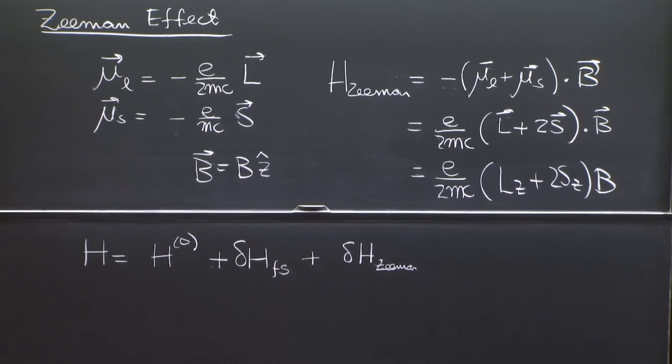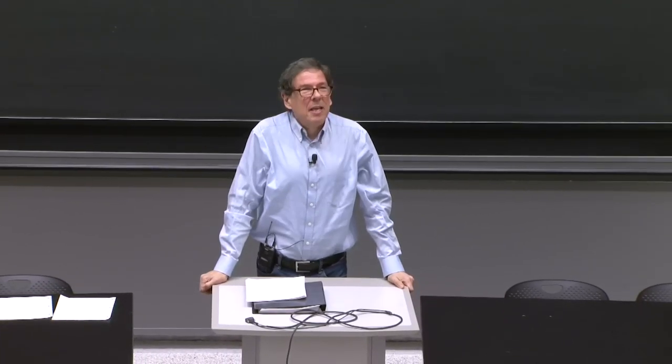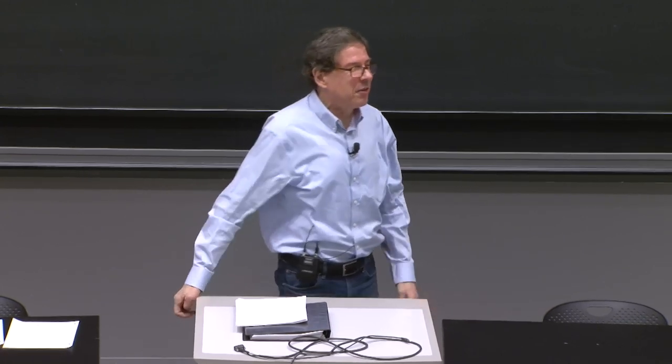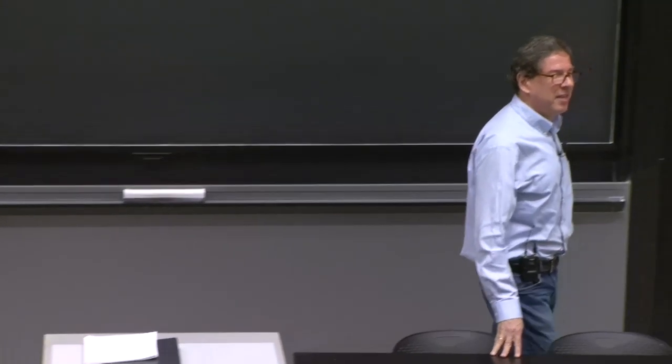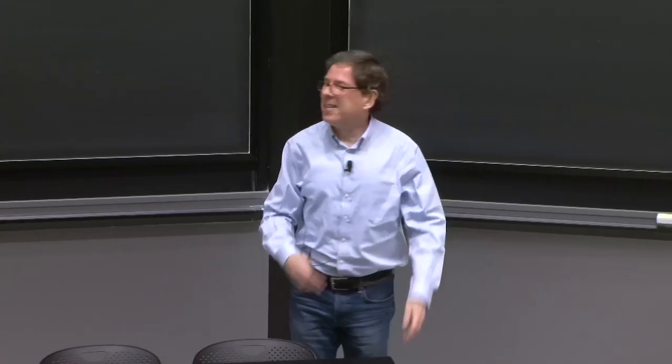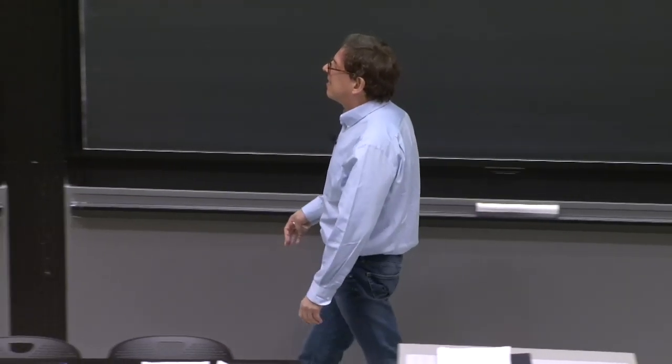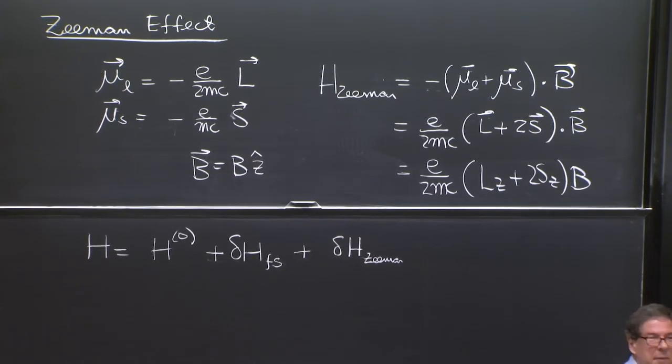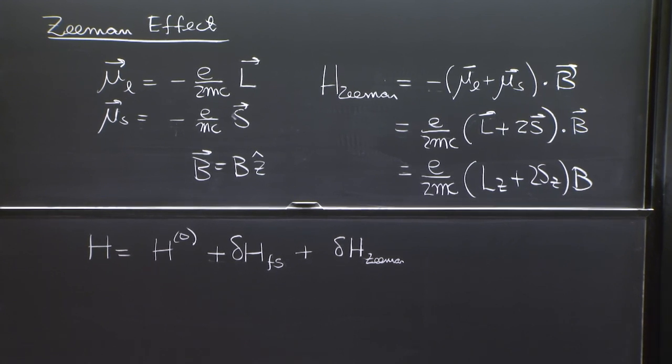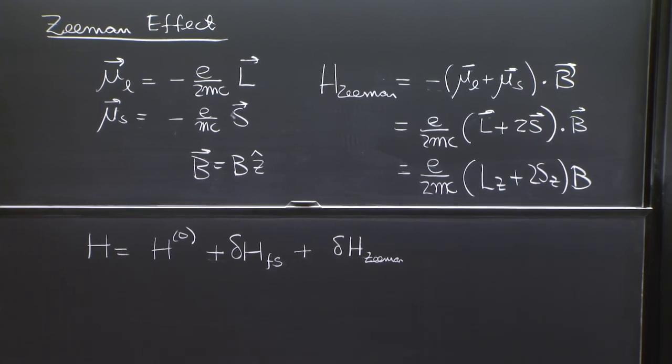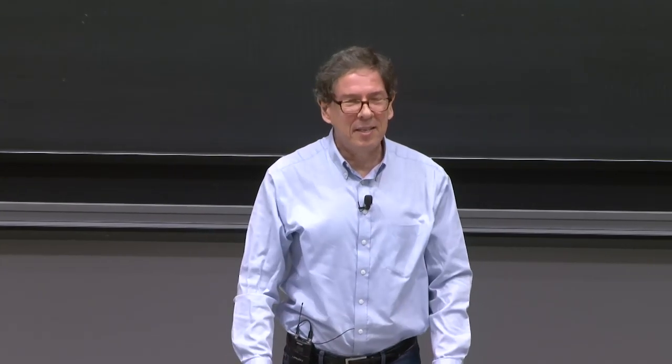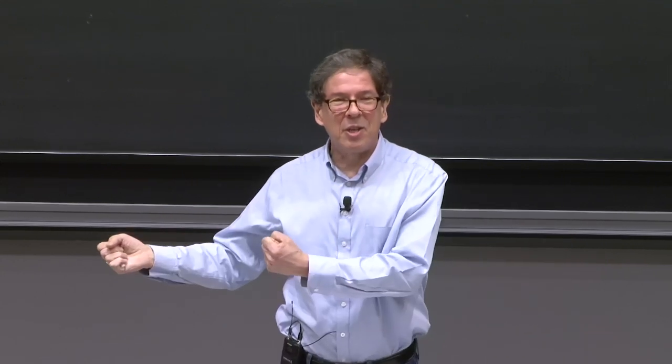And the reason the Zeeman effect is non-trivial for us, and it's a very interesting and somewhat challenging example of what we have to do in perturbation theory, is that we cannot forget about the fine structure. So if it would be just this, it would be kind of simple. But we have the whole thing. So we have to make an approximation sometimes.